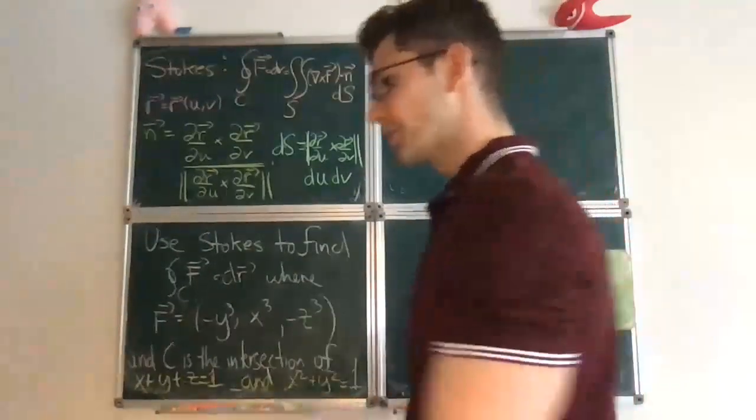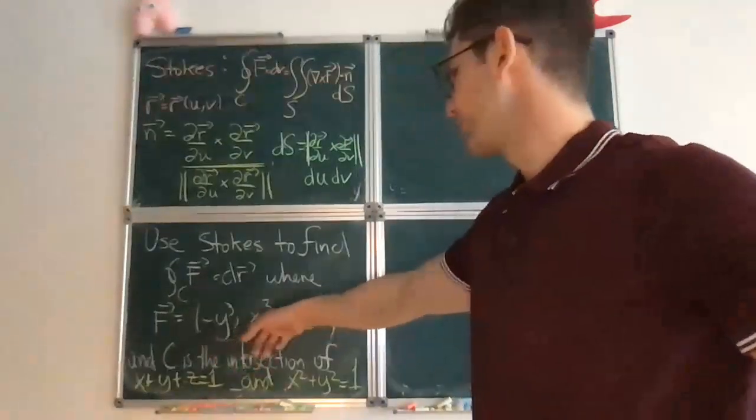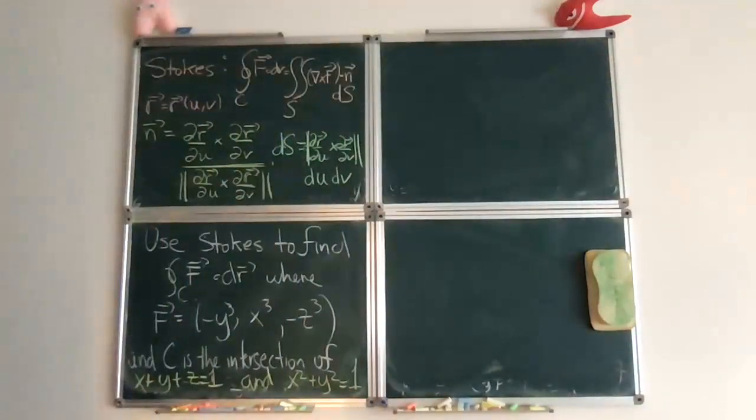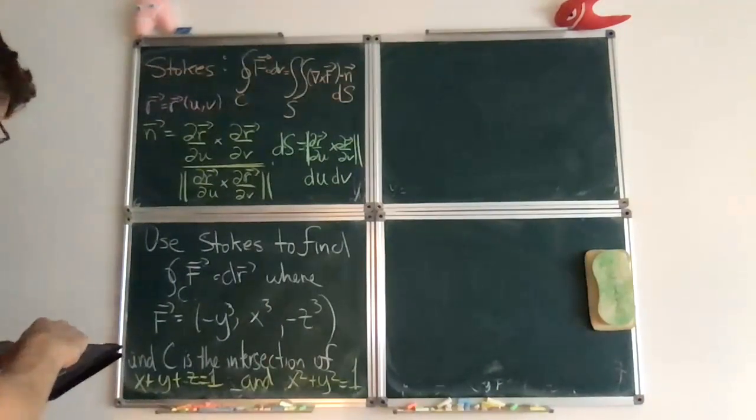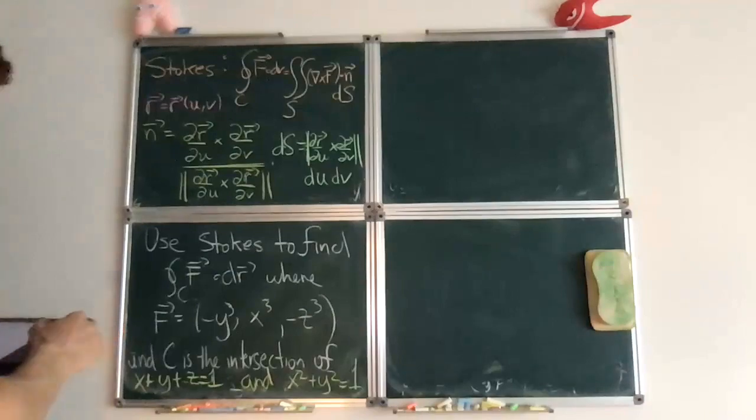So in this particular case, we're going to use Stokes for this vector field: minus y cubed, x cubed, negative z cubed. And the curve that we're going to take is the intersection of a plane and the unit circle. Let me just check, it's the same as in my notes. Good.